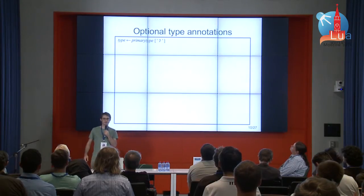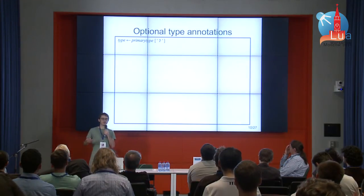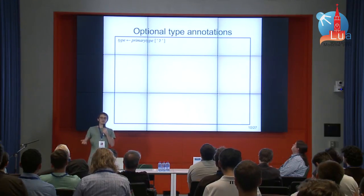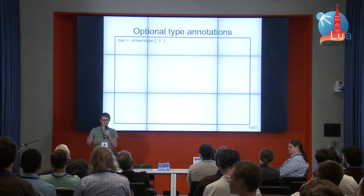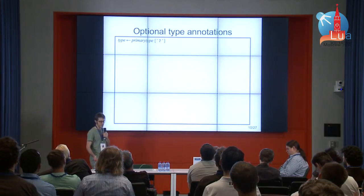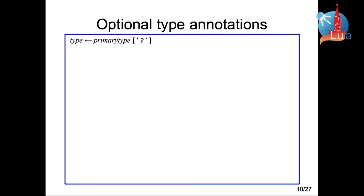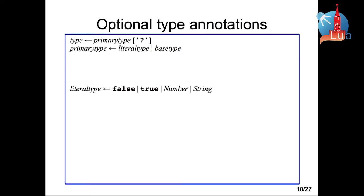Before presenting the other examples, I'd like to show you the optional type annotations available for declaring locals and declaring functions. We can annotate using a primary type that can be nilable. The primary type can be a literal type or a base type. Literal types are false, true, number, and string. Base types are boolean, number, and string.